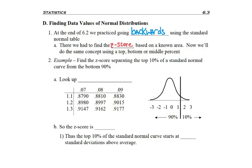And so here's an example of a question. Find the z-score separating the top 10% of the standard normal curve from the bottom 90%. Now normally the question would just give you one piece of that. It would just say find the z-score for the top 10% or find the z-score for the bottom 90%.